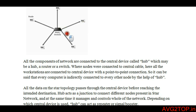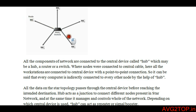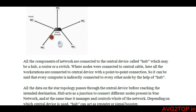Sometimes hubs, switches, or routers act as repeaters. A repeater is the device which boosts up the signals. If there is any connection loss, the repeater function can boost the signal so that data can be sent from one place to another within the network.